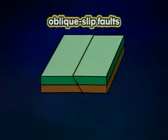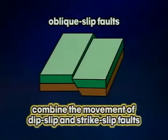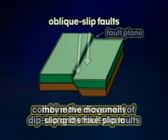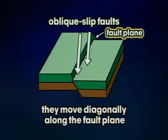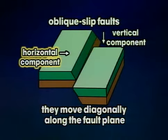Oblique-slip faults combine the movement of dip-slip and strike-slip faults. They move diagonally along the fault plane, having both a vertical and horizontal component — sideways and up.